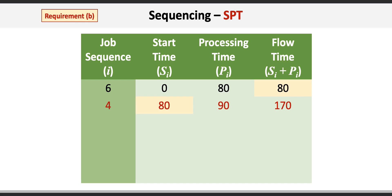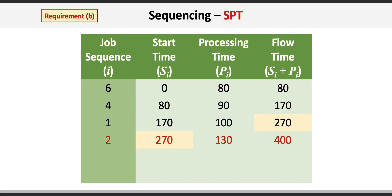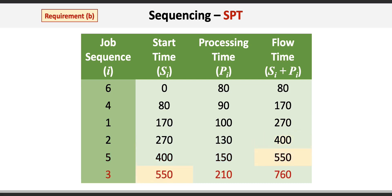The next shortest processing time is job 1 at 100 minutes, resulting in a flow time of 270 minutes. Next is job 2 at 130 minutes, which starts at 270 minutes and has a flow time of 400 minutes. Job 5 follows with a processing time of 150 minutes, resulting in a flow time of 550 minutes. Finally, job 3 is the longest with a processing time of 210 minutes, resulting in a flow time of 760 minutes.